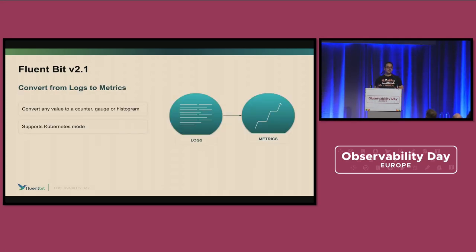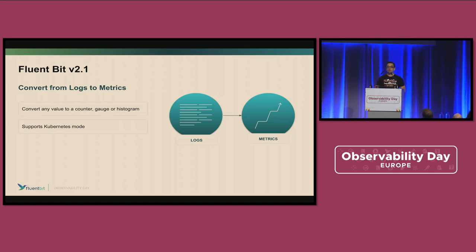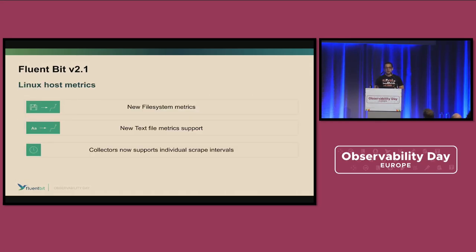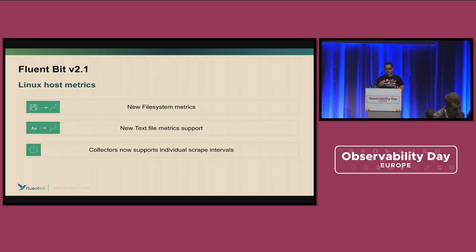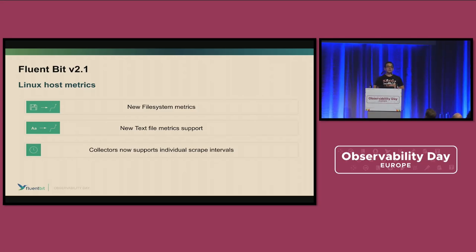We also have the capability to convert from logs to metrics. There are a couple of applications that ship metrics as logs, but you would like to expose those metrics — for example, in Prometheus format. With this new capability, now you can accomplish that. From a data metrics collection standpoint for Linux, we have a metrics collector, now extended with file system support. You can also read metrics from a text file, and you can configure the different collectors for Linux at different intervals, which was not supported before.